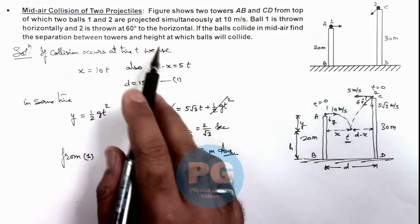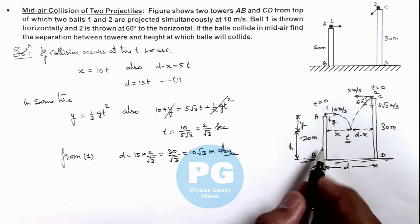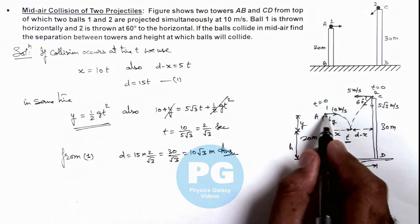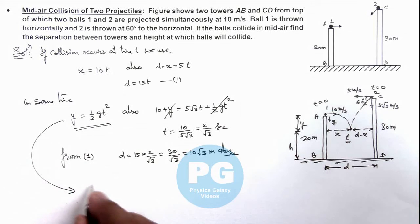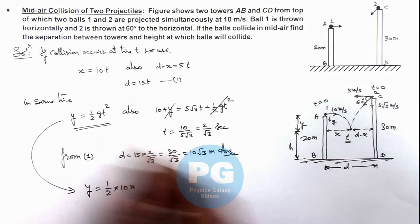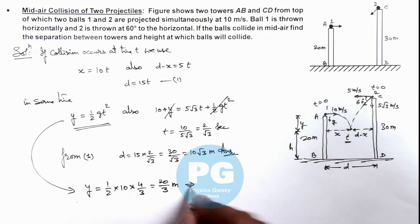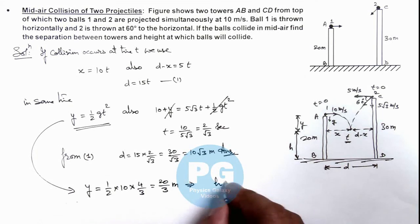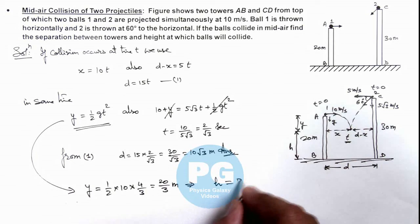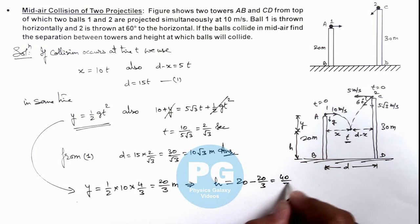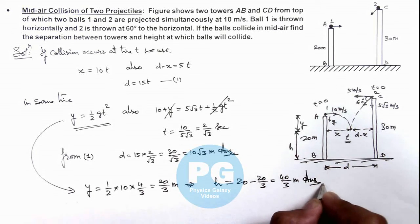We are required to find the height at which the balls will collide. So here we can first calculate the value of y, which is the distance from point A where the collision is taking place. We can write y equals half g, we can take as 10, and t squared here we take as 4 by 3. So this is giving us 20 by 3 meters. This implies height h where collision is taking place above the ground is 20 minus y, that is 20 minus 20 by 3, so this is 40 by 3 meters, which is the answer required for this problem.